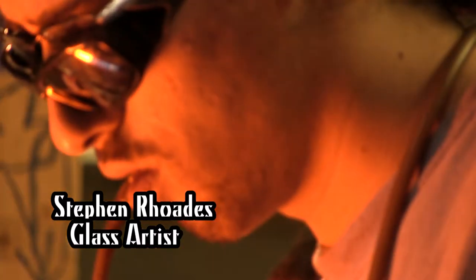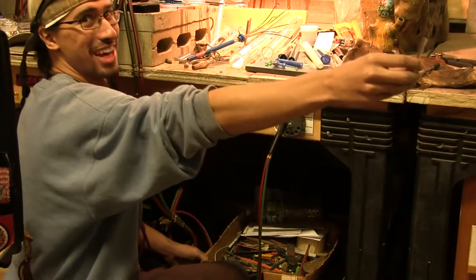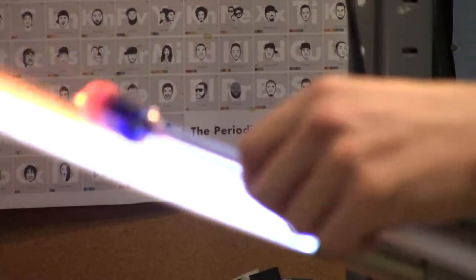I'm Steven Rhoades. I'm 26, I'm a glassblower, born in Boston, but I've been living in Burlington, Vermont for almost a decade.